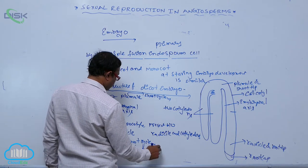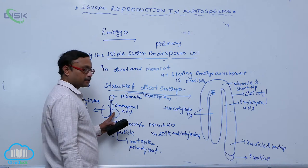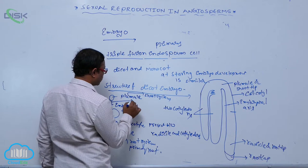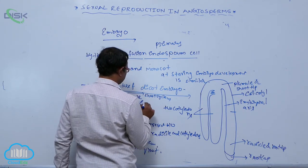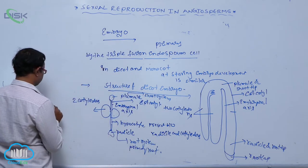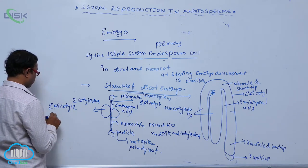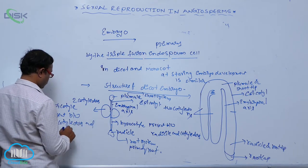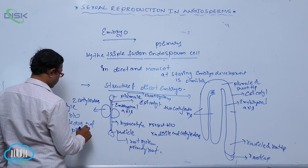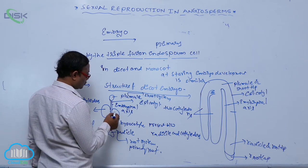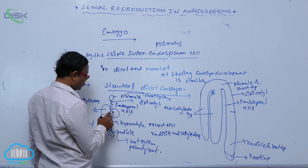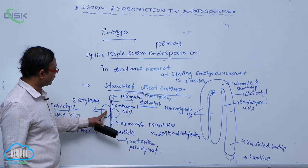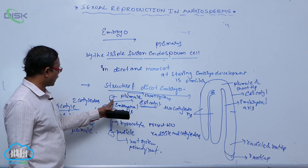The cotyledons are attached to the embryonal axis. From the cotyledons up to the plumule, this region is known as the epicotyl. So epicotyl is present between the cotyledons and the plumule.